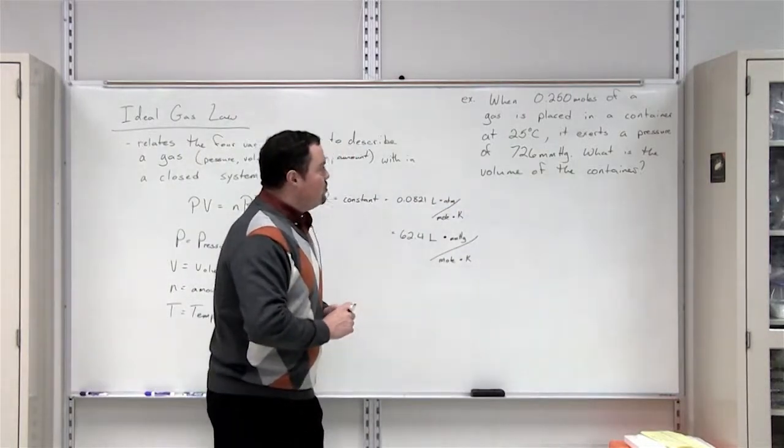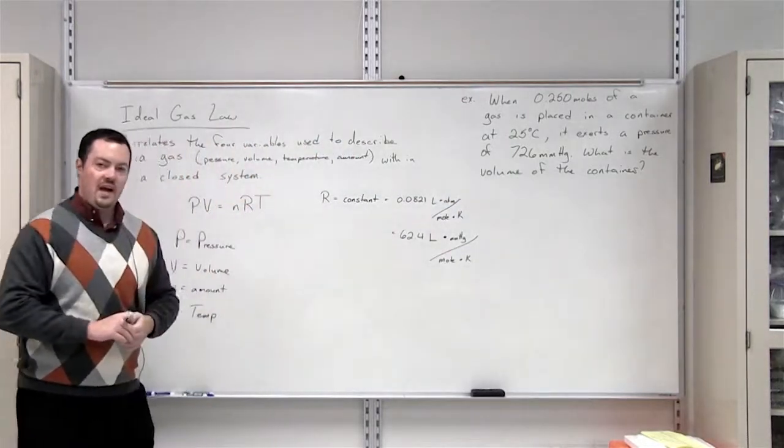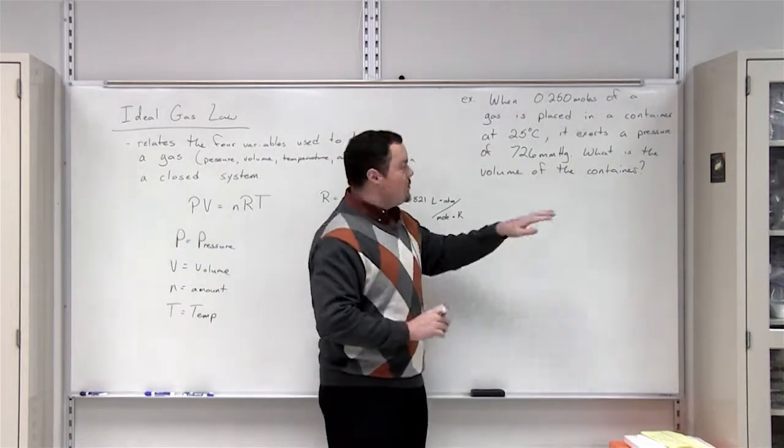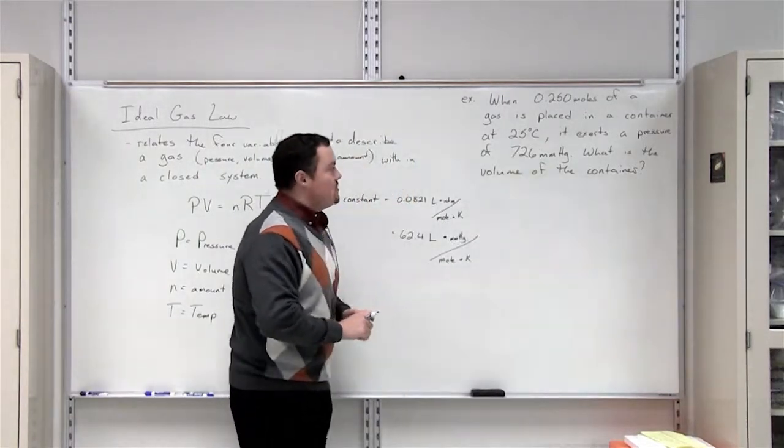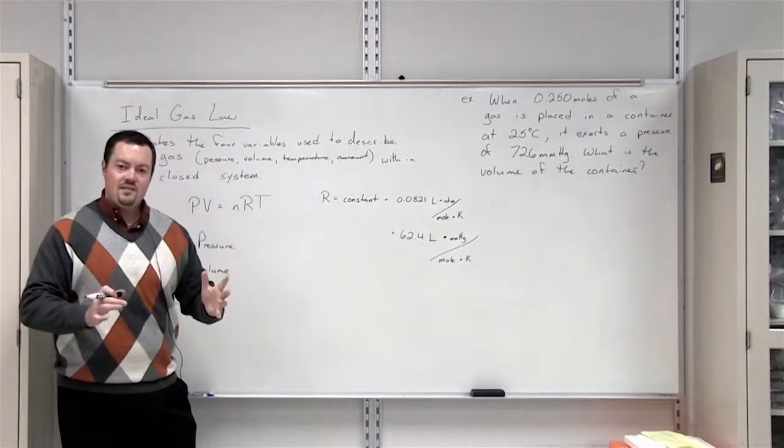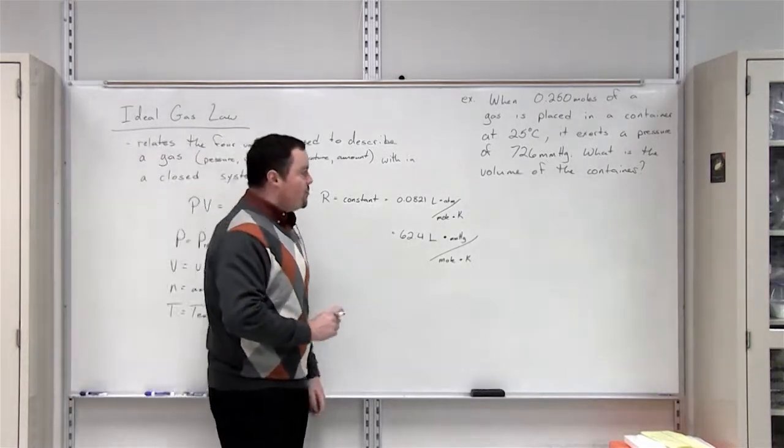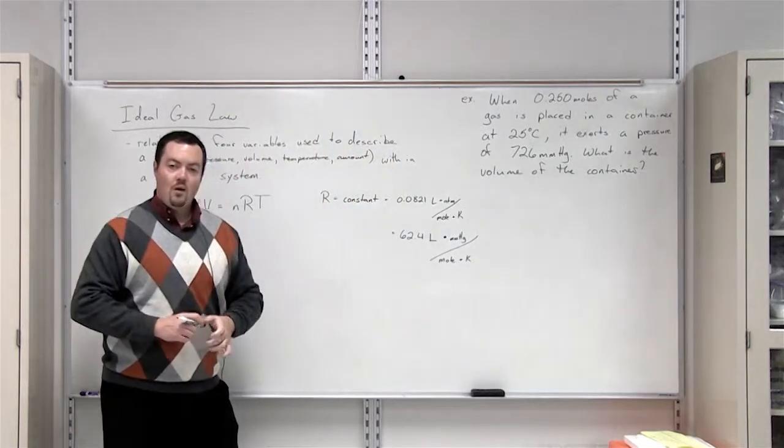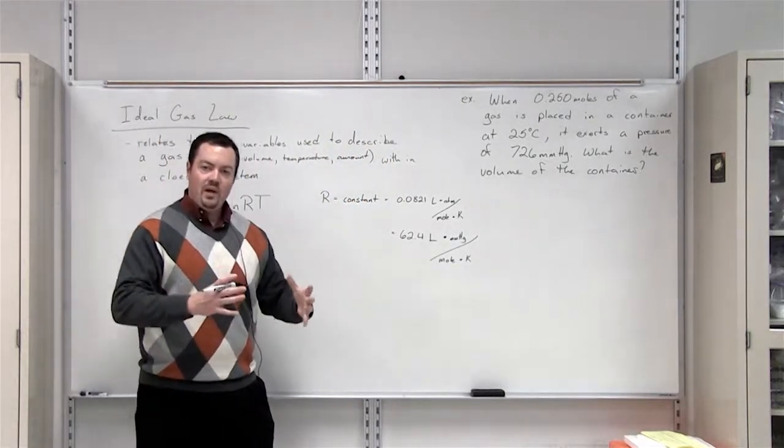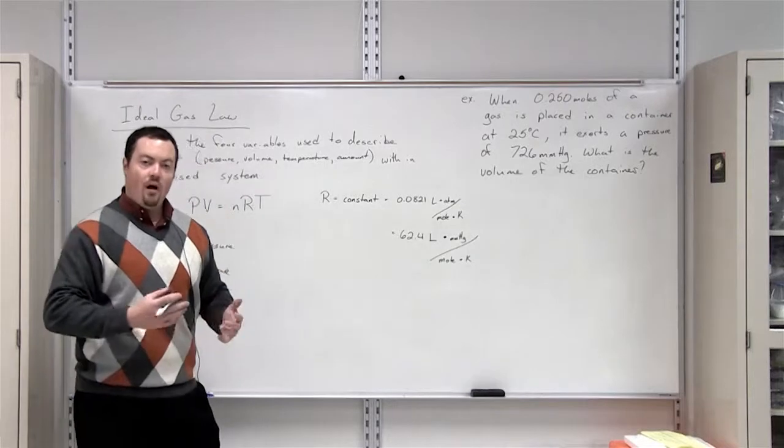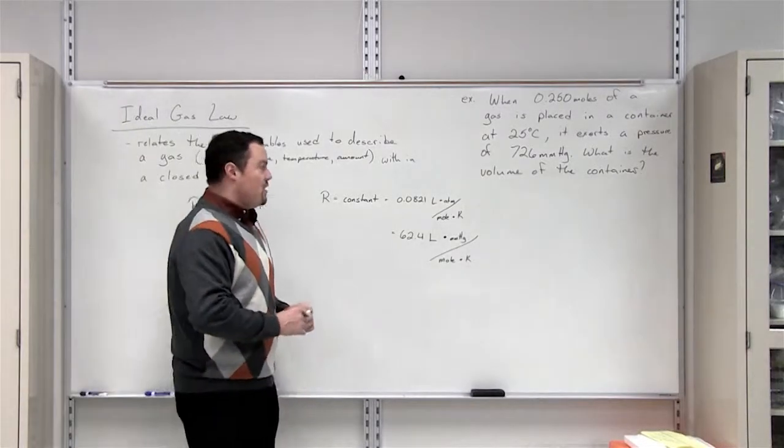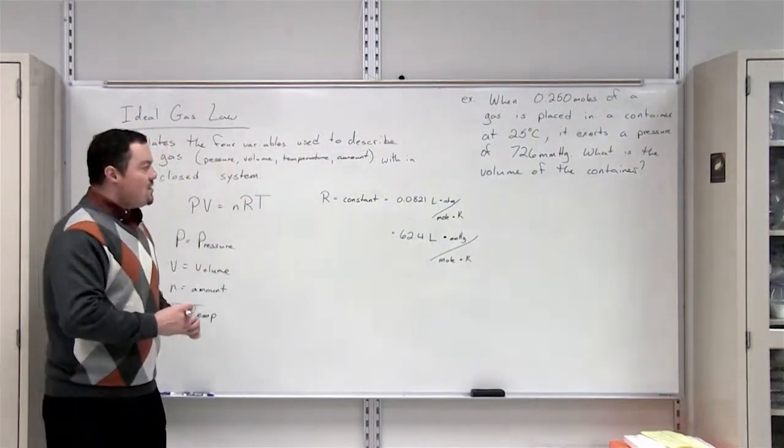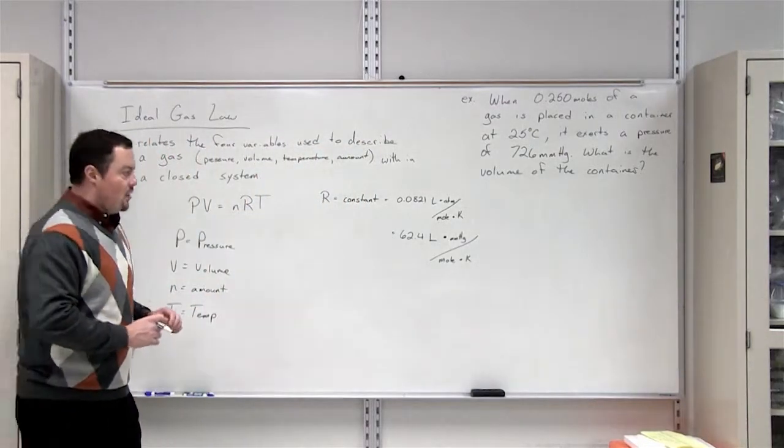So here we have 0.250 moles of a gas. We place this gas into a container and it's at room temperature, or 25 degrees Celsius. This gas inside of this container exerts a pressure of 726 millimeters of mercury. What we want to know is how big the container is or the volume of the container that this gas is residing in.